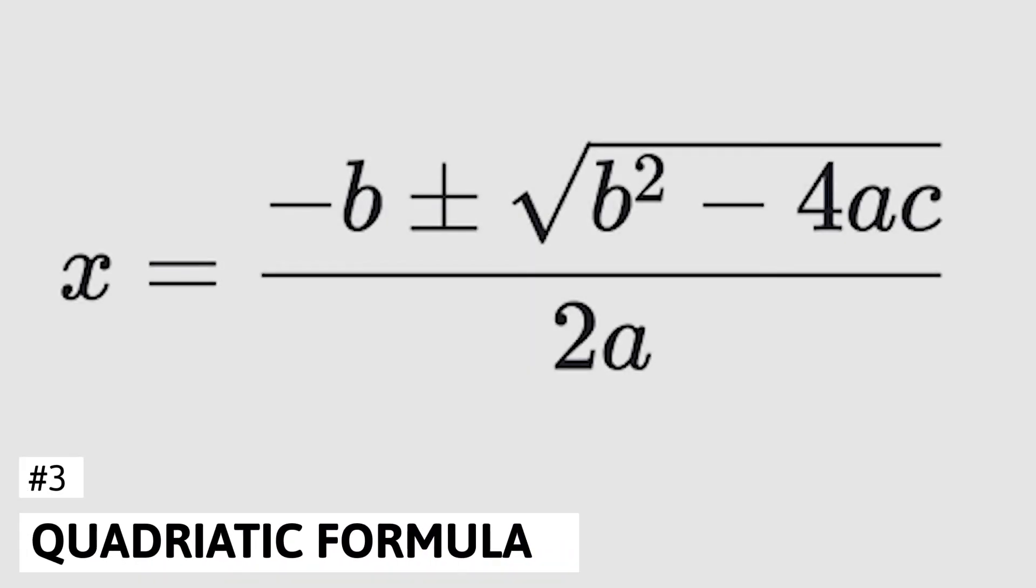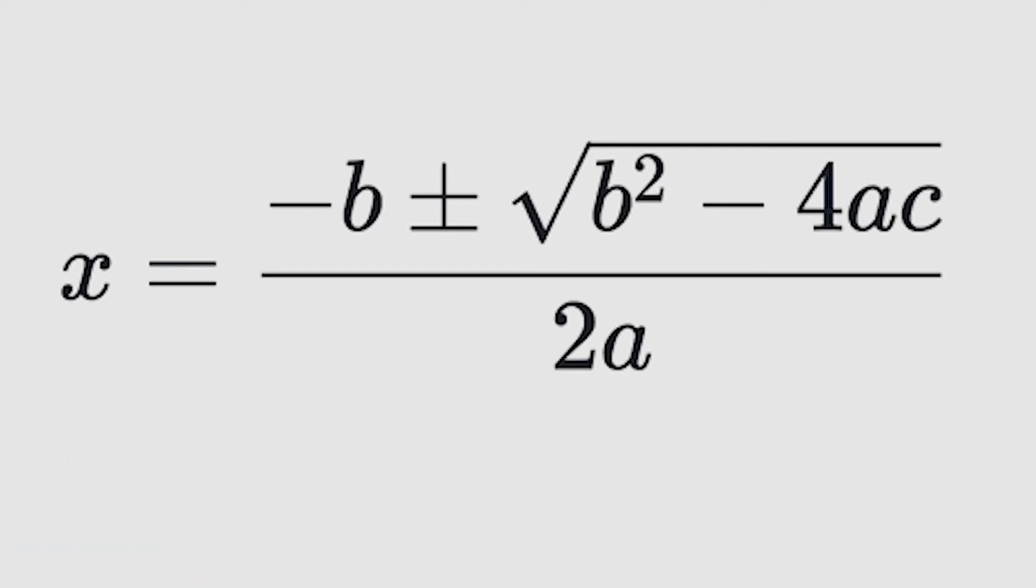Number 3, the Quadratic Formula. If you've taken Algebra 1, you've most likely heard of the Quadratic Formula. The Quadratic Formula states that x equals minus b plus or minus the square root of b squared minus 4ac, and then you take all of that and divide it by 2a. This only applies in the situation where the equation's in the format ax squared plus bx plus c equals 0.